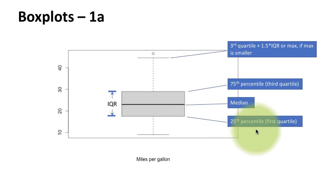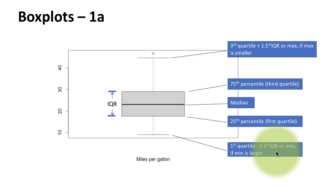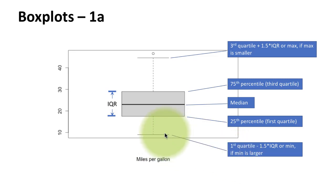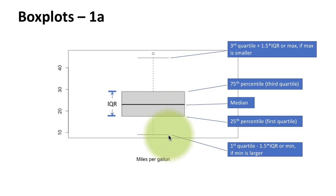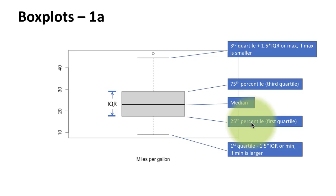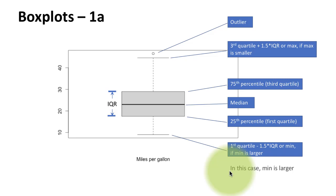Similarly, the bottom whisker represents the first quartile minus 1.5×IQR, or the minimum, if the minimum is larger. In this case, since there is no outlier at the bottom, the bottom whisker actually represents the minimum. You can see that it doesn't appear to be 1.5×IQR below the first quartile — it's about 1 IQR below — because the minimum value in the dataset is itself not smaller than Q1 minus 1.5×IQR. So the two whiskers either represent the max and min, or Q3 plus 1.5×IQR and Q1 minus 1.5×IQR.